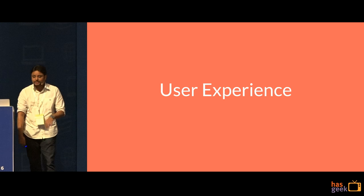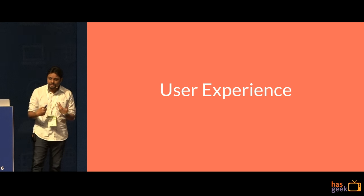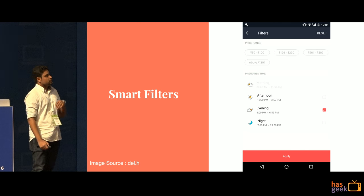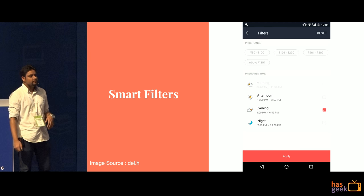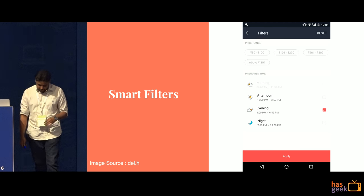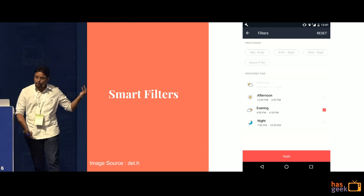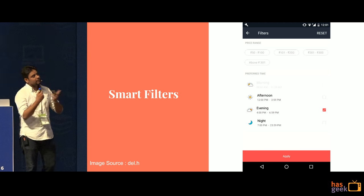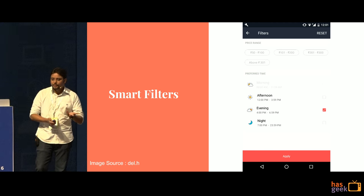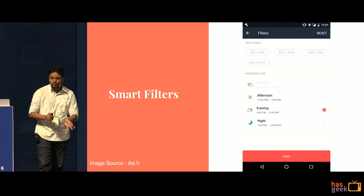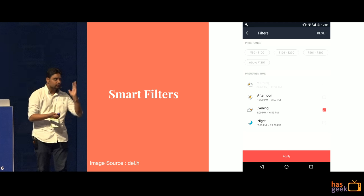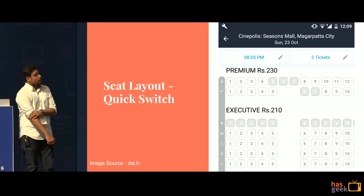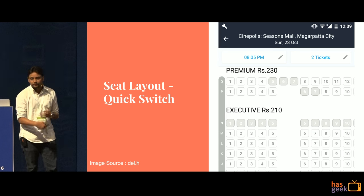After changing the architecture, the next big change was the user experience of the entire app. We now have smart filters in the new app. A lot of people who have been using the website already have this feature — you could filter show times by time and price, tell it to show all evening shows within the price range of 100 to 200 and it would filter that. That now comes with the new app.